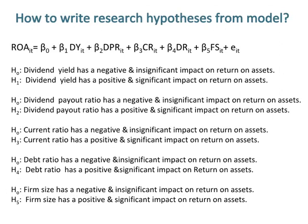How to write research hypotheses from a model. After analyzing dependent and independent variables, we can easily write null and alternative hypotheses. Number one alternative hypothesis: dividend yield has a positive and significant impact on return on assets. Number two: dividend payout ratio has a positive and significant impact on return on assets. Number three: current ratio has a positive and significant impact on return on assets. Number four: debt ratio has a positive and significant impact on return on assets. Number five: firm size has a positive and significant impact on return on assets.